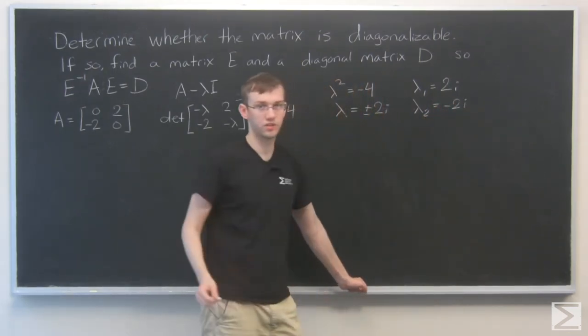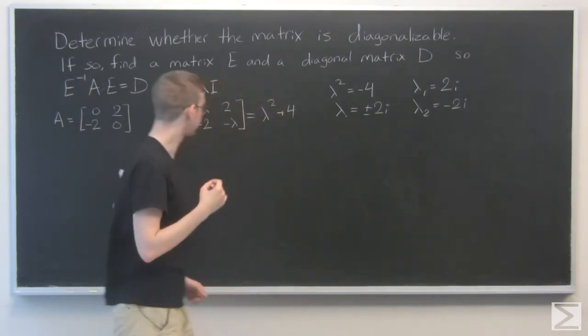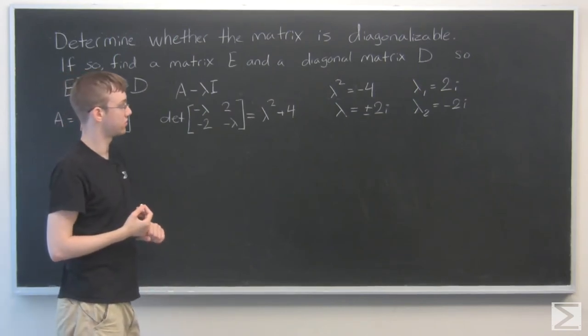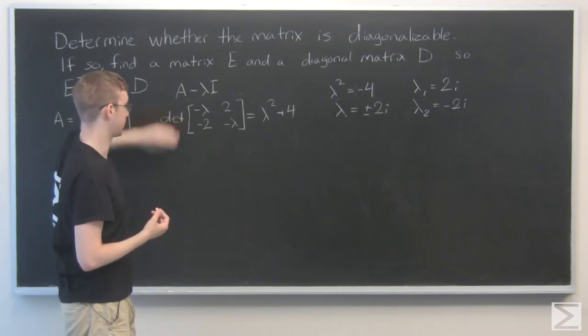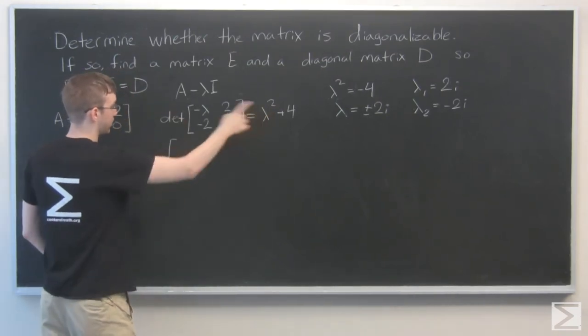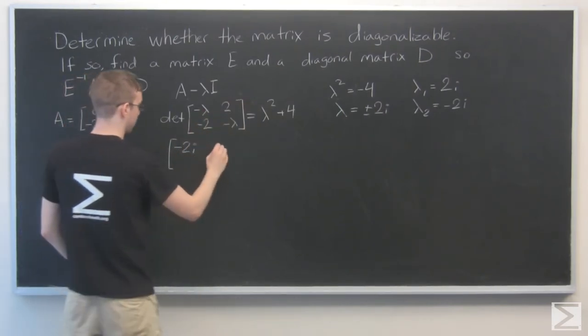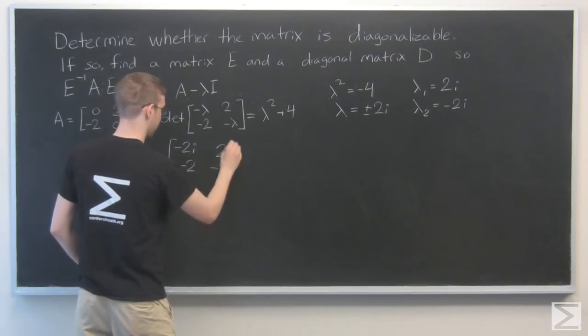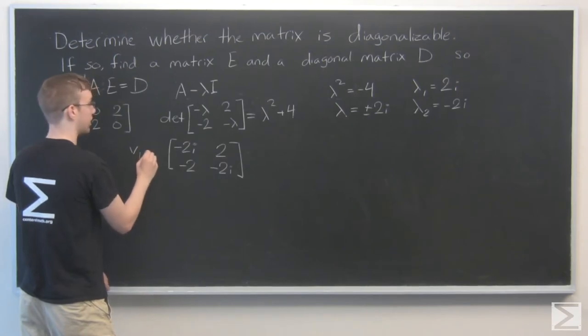Now we need to find the eigenvectors for each of these. Let's start by plugging in lambda 1 equals 2i into this matrix right here without the determinant part. 2i, plug it in as negative lambda, we get negative 2i, 2 minus 2, and negative 2i. I'll write that we're trying to find eigenvector 1.